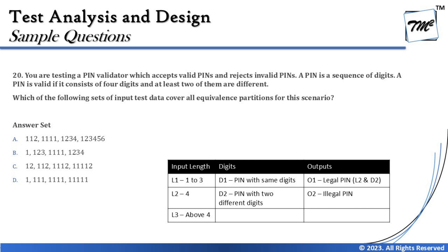Option B provides: '1' covers D1, L1, O2; '1,2,3' covers D2, L1, O2; '1,1,1,1' covers D1, L2, O2; and '1,2,3,4,5' covers D2 and outputs. Correlating with our table, L3 is not covered anywhere — none of the values listed have length above four digits in this set. So we cannot conclude this is the best combination to hit all partitions. L3 is missing, so option B is incorrect.